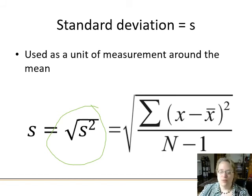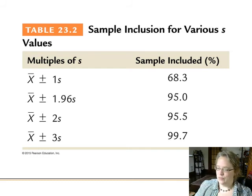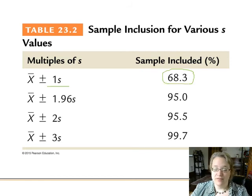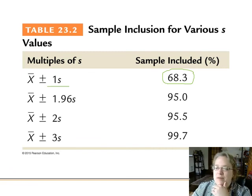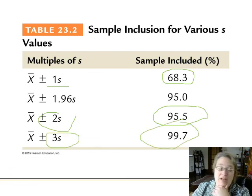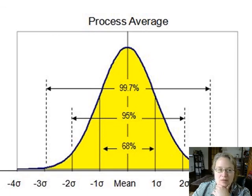Standard deviation is a useful way to describe how much of a population falls near the mean. Within one standard deviation of the mean you'll include 68.3% of your sample. Within two standard deviations you include 95.5%, and within three standard deviations you'll have 99.7% of your sample. This is true for all bell curves — the standard deviation will be bigger or smaller depending on how tight or wide your curve is, but it will still include these amounts of your observations.